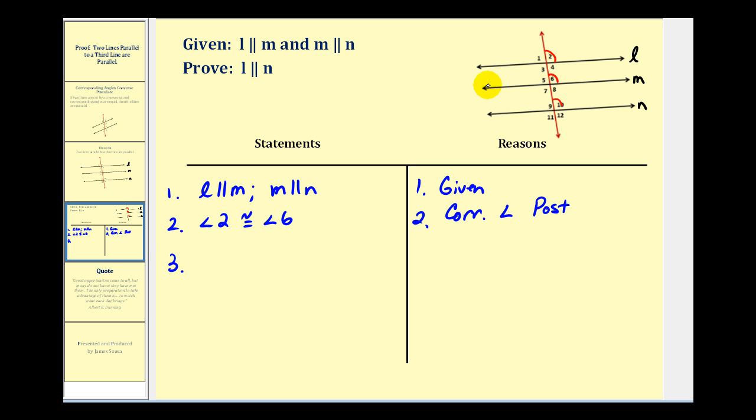Then looking at lines M and N, angle six would be congruent to angle ten. For the same reason, the corresponding angle postulate.